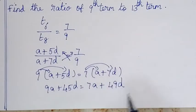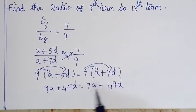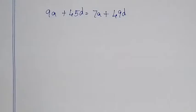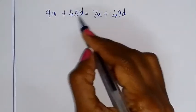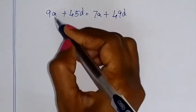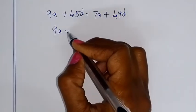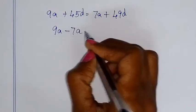Move 9A minus 7A to one side, and 49D minus 45D to the other side.